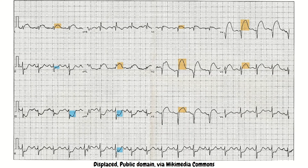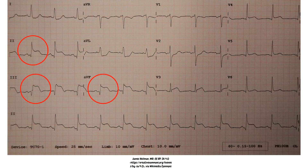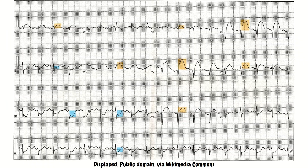Now have a look at this EKG — where do you see elevation? Most notably you see elevation in V2, V3, V4, and V5. We know that V3 and V4 correspond to the anterior leads and are consecutive. You do see some elevation in V2 and V5, but the key consecutive leads we're focusing on are V3 and V4, which correspond to the anterior part of the heart. That's why it's important to know which leads are consecutive and that we're looking for elevation of one to two millimeters or one to two little boxes.